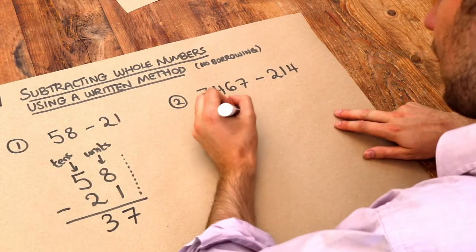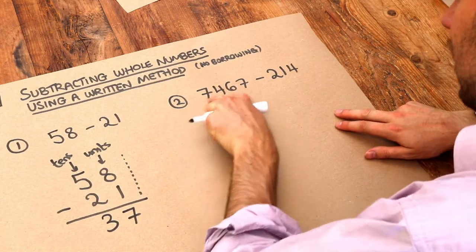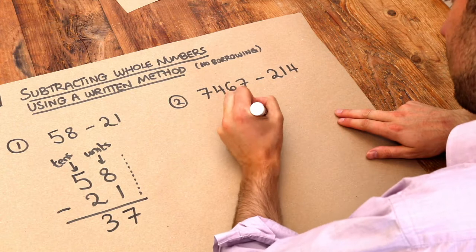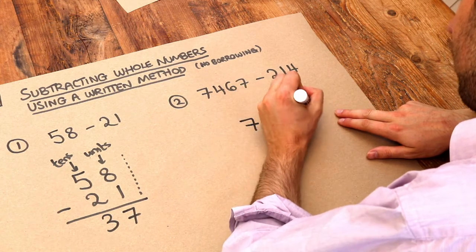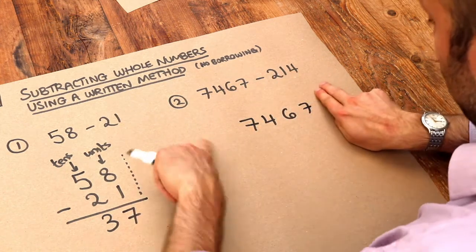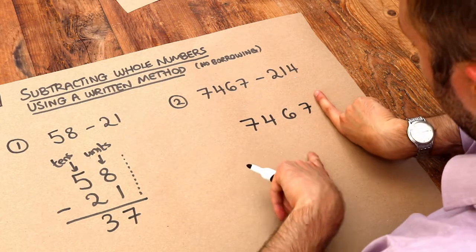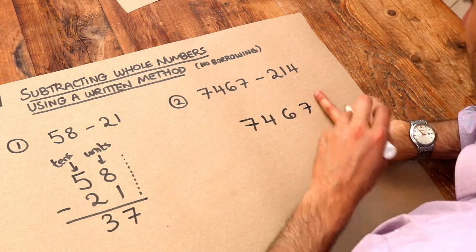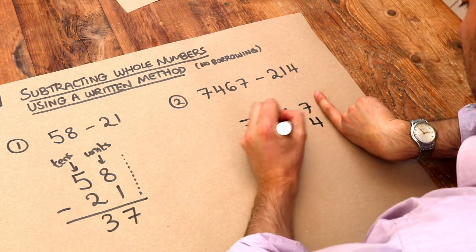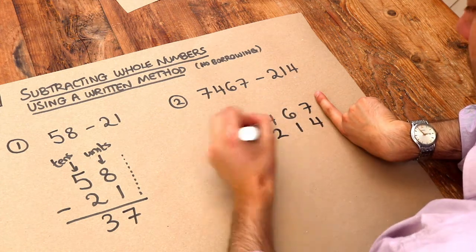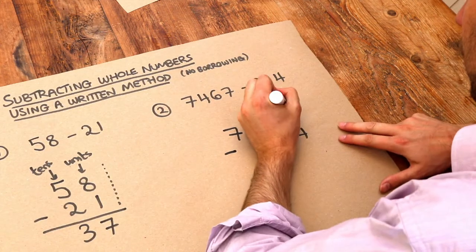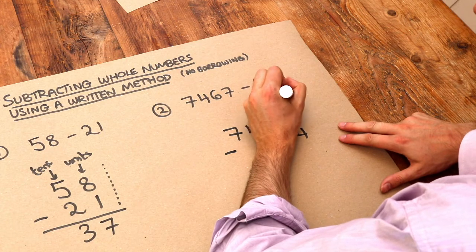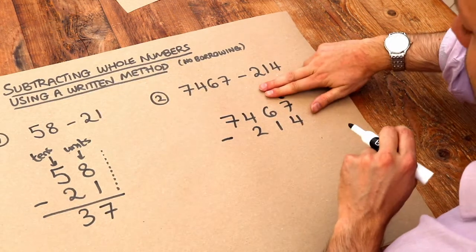Now this second one, let's do the same thing. So we arrange these numbers into rows like that. As I said, we push the numbers to the right, so imagine I've got my finger here. We push the numbers to the right, so we're going to do 7467 minus 214 like that, and that makes sure that we've got the units digits on the right here.